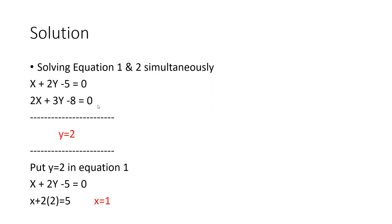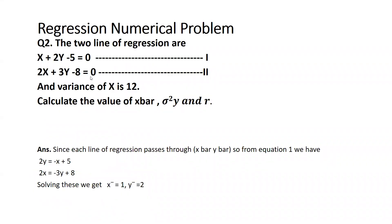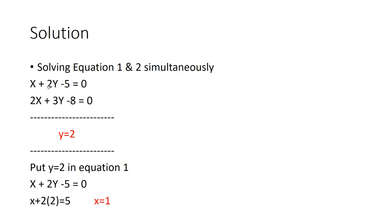So what we have to do, we will solve equation 1 and 2 simultaneously. You can see here: x plus 2y minus 5 equal to 0, and 2x plus 3y minus 8 equal to 0. These are the original equations. What we have to do after solving these equations is multiply the upper equation by 2, and after that subtract the lower equation from it. Finally, we will reach the solution y equal to 2.